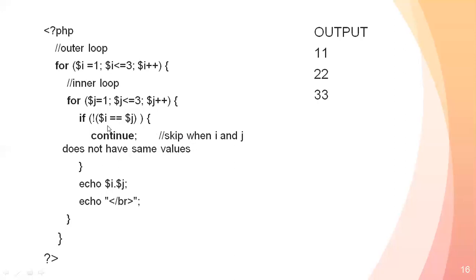If $i and $j don't match, they will be printed using concatenation with the dot operator. If they are equal, the continue skips that combination. So 1-1 is skipped (i equals j), 1-2 is printed, 1-3 is printed, then 2-1 is printed, 2-2 is skipped, 2-3 is printed, 3-1 is printed, 3-2 is printed, and 3-3 is skipped.